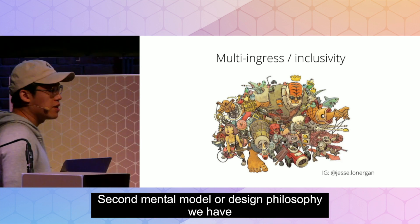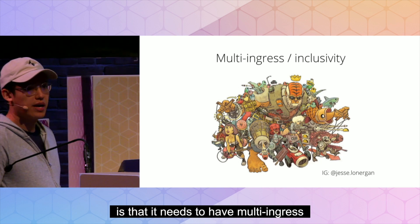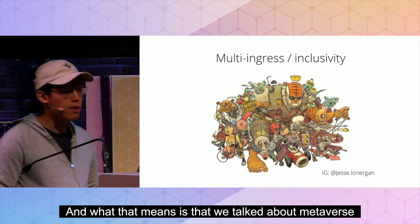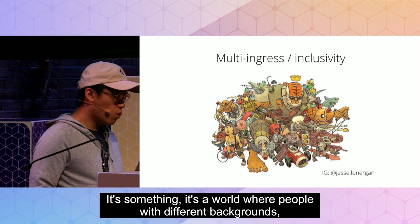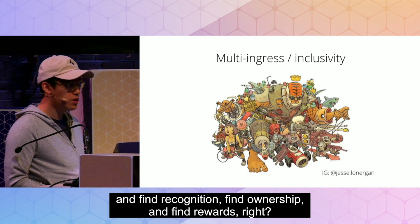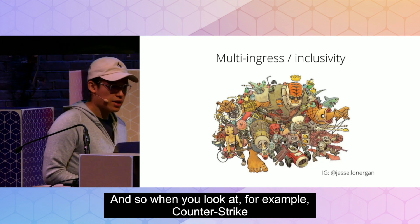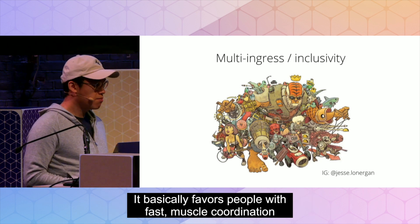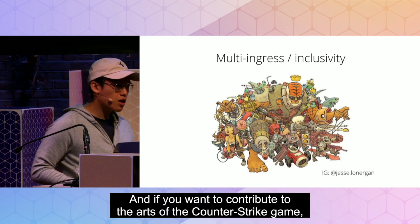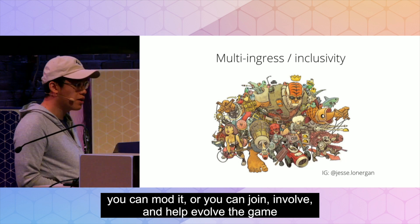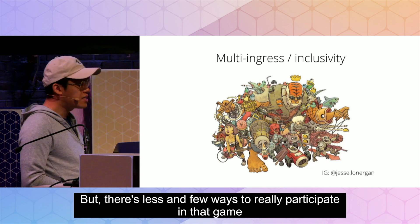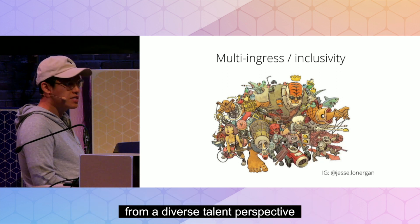The second mental model or design philosophy is that it needs to have multi-ingress — it needs to be designed with inclusivity in mind. When we talk about the metaverse, it's a world where people with different backgrounds, interests, and talents can come and express themselves and find recognition, ownership, and rewards. When you look at Counter-Strike, for example, it basically favors people with fast muscle coordination and fast technical thinking. It doesn't favor people from other backgrounds at all, and there are very few ways to participate from a diverse talent perspective.